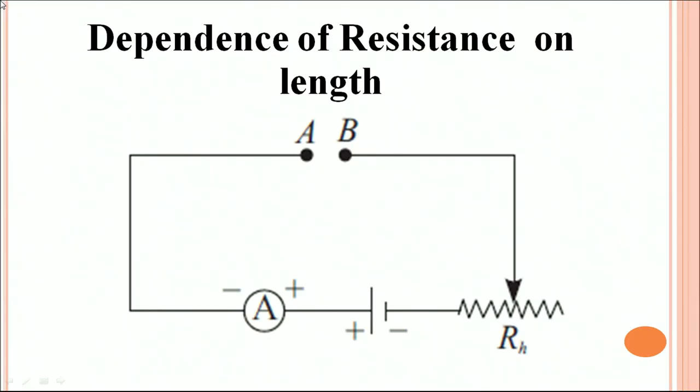How does resistance of a conducting wire depend on its length? To understand that, we can assemble a very simple circuit. As you can see in this schematic diagram, we have a battery connected to one part of a rheostat, mainly to control the amount of current flowing through the circuit. The positive of the battery is connected to a milliammeter, and the other part of the milliammeter is connected to the conducting wire. Similarly, the other part of the rheostat is connected to the other end of the conducting wire. Let us perform a simple experiment.